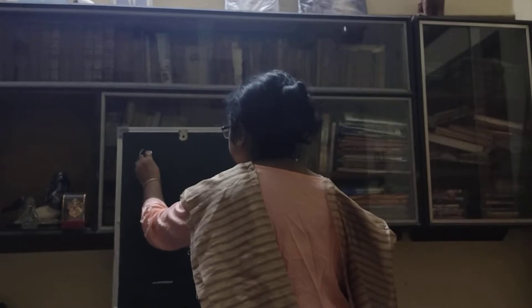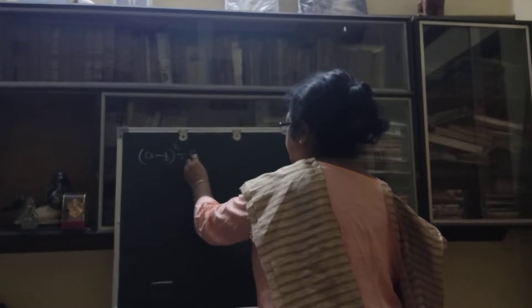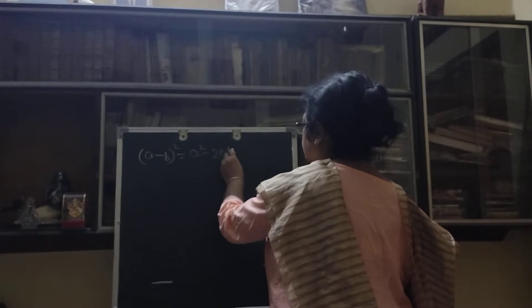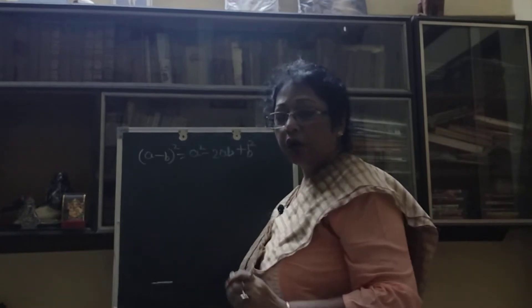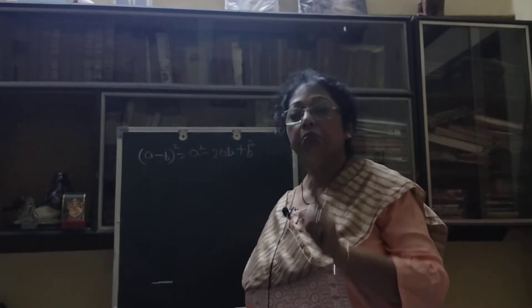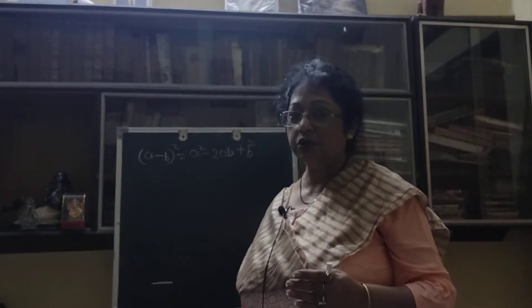Let us start today's first one: a minus b whole square. All of you know that is a square minus 2ab plus b square. It is the same as a plus b whole square — only when a minus b whole square, then you will write minus 2ab. In a plus b whole square, you write a square plus 2ab plus b square.